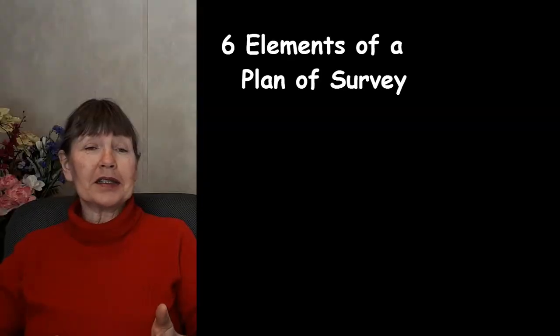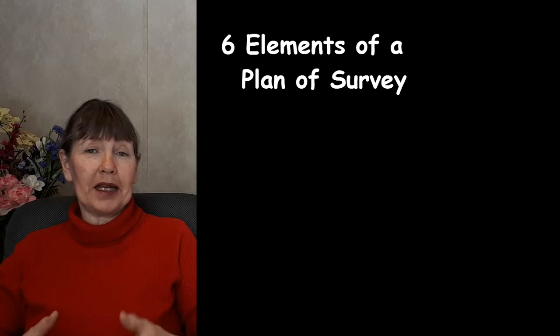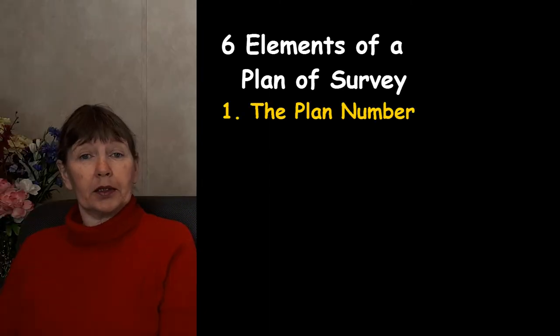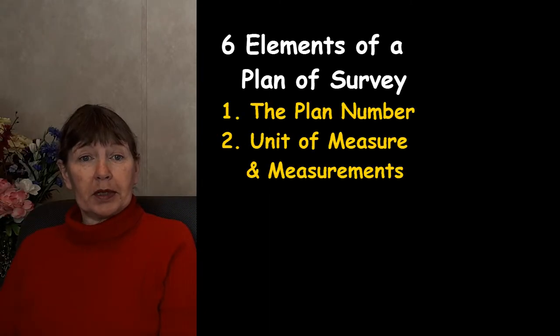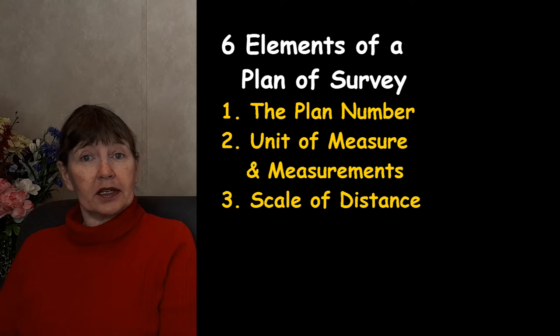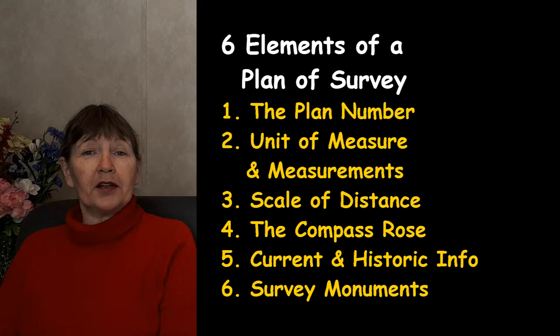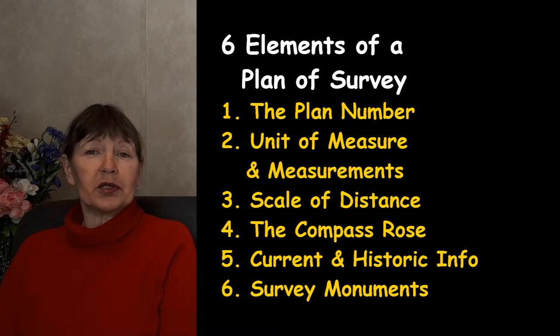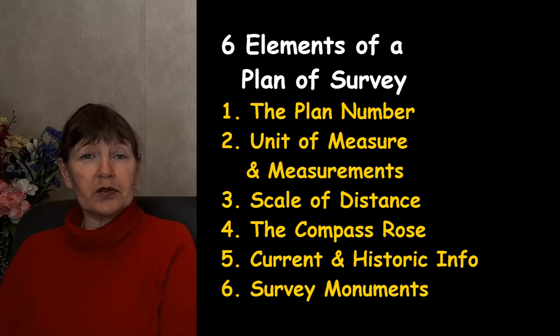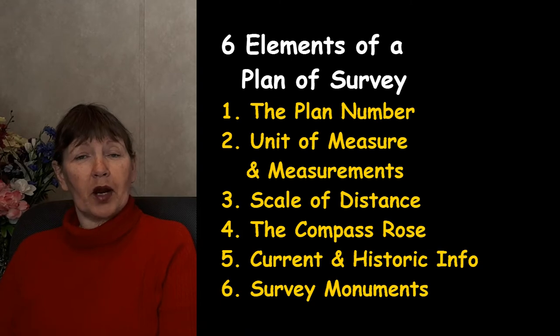I've covered the six elements of the plan of survey: the plan number, the unit of measure, the scale of distance, the compass rose, current information and historic information, and of course survey monuments — the legal markers which surveyors use to mark the boundary of the property on the land. So now you have an understanding of the basics of reading a plan of survey.